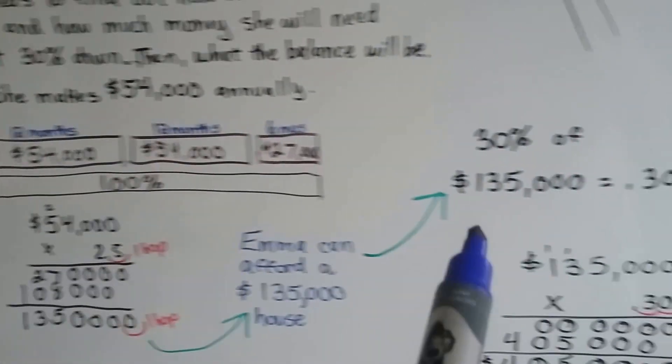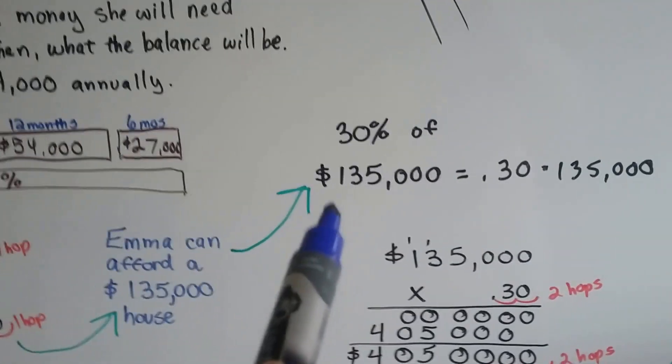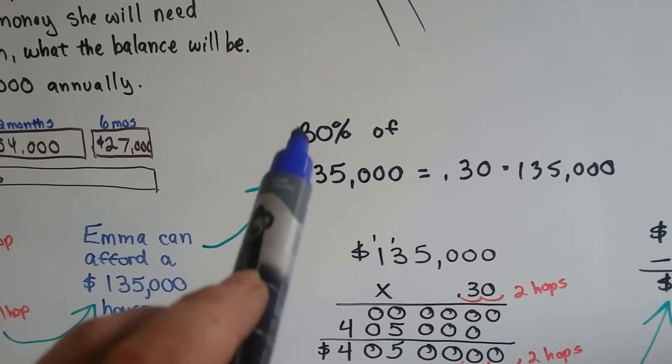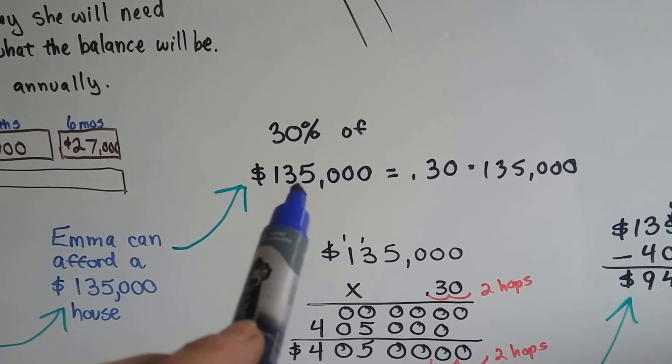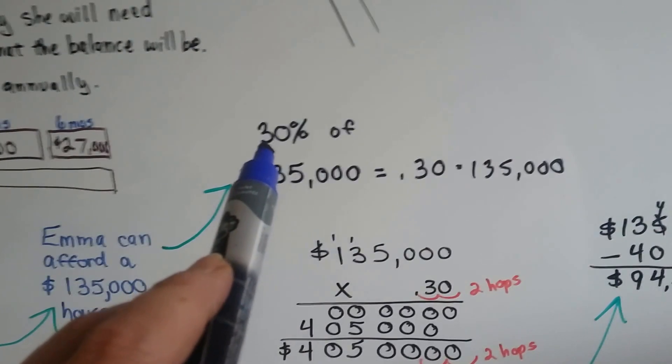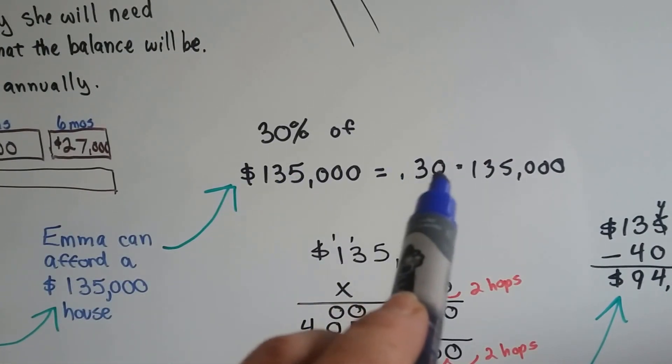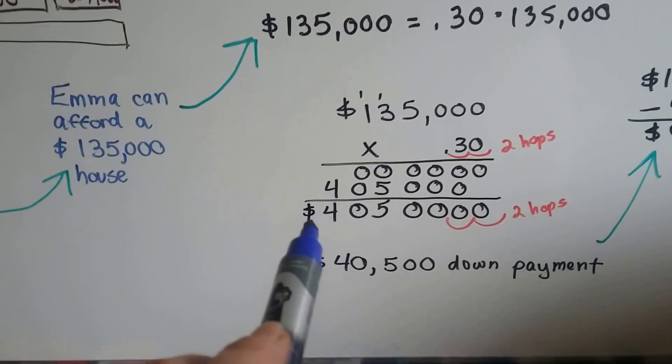Now, she needs to figure out her 30% down payment to buy a conventional mortgage. So, we need 30% of $135,000. So, we change the percentage to a decimal, 0.30, and we multiply it by 135,000.